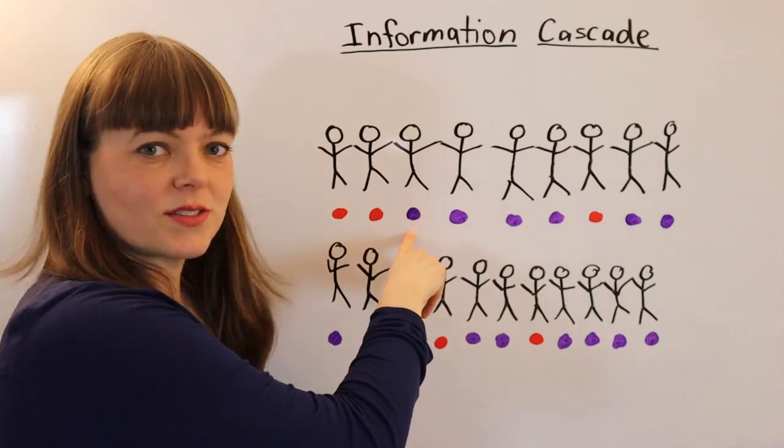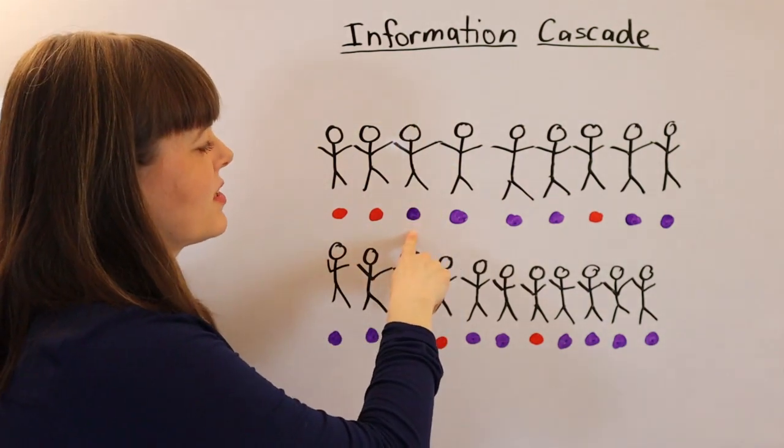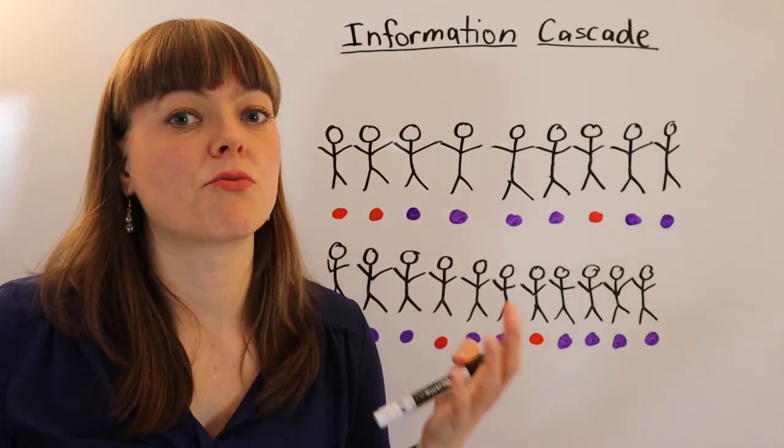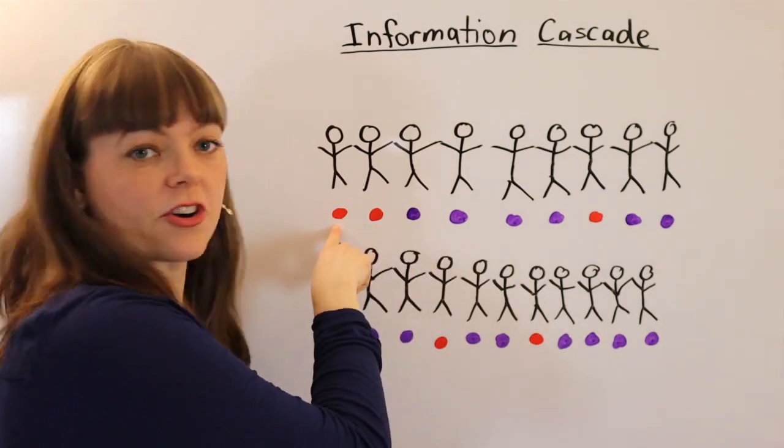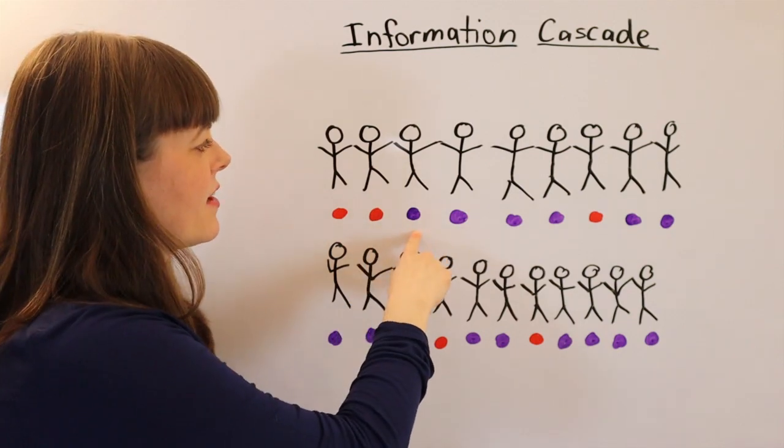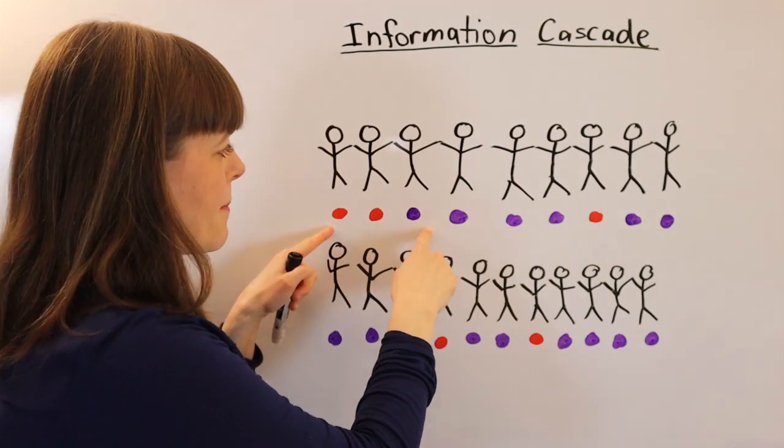Now here is where the problem occurs. So we go to this person and we say, what is your bet? Are you going to bet purple? Are you going to bet red? So we know that this person knows for sure that this person has chosen red and probably also knows that this person has red. So if they actually look at the full set of information available to them.